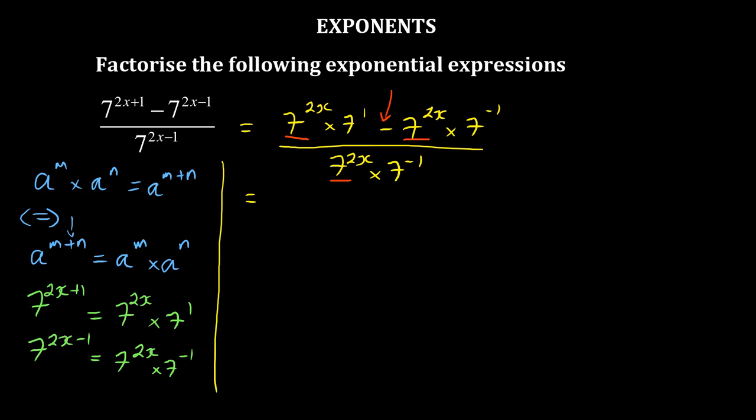This means then we can factorize 7 to the power 2x. In this case you will have 7 to the power 1 minus 7 to the power negative 1.